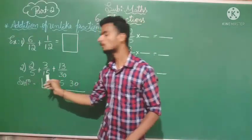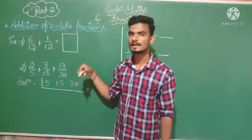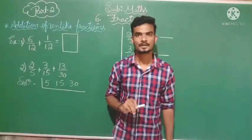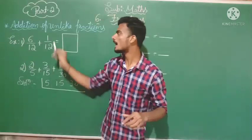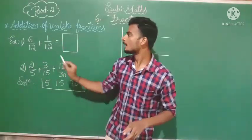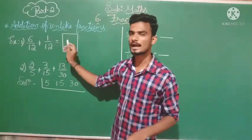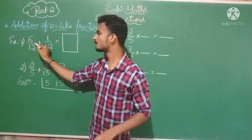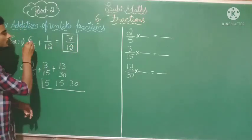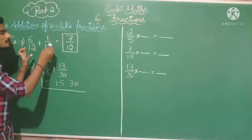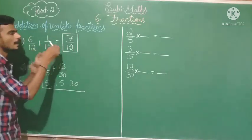If this type of problem arises, we want to convert unlike fractions into like fractions by making all the denominators the same. For example, 6/12 plus 1/12 is a like fraction. Add the numerators: 6 plus 1 gives 7. Write 7 as the numerator and keep the denominator the same — do not add the denominators. So the answer is 7/12.